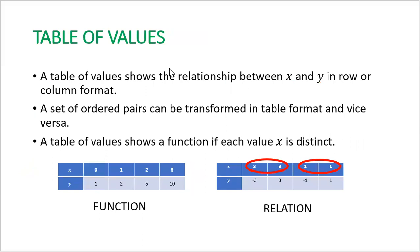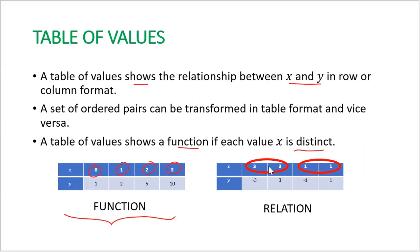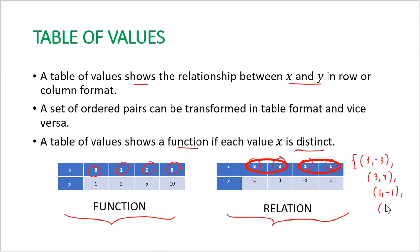A relation can also be represented in a table of values, showing the relationship between x and y in row or column format. A table of values represents a function if each value of x is distinct. In the first table, all x values are different, so it represents a function. In the second table, two x values are equal, making it just a relation. If we convert this into ordered pairs — (3, -3), (3, 3), (1, -1), (1, 1) — it is not a function because two ordered pairs share the same x-coordinate.